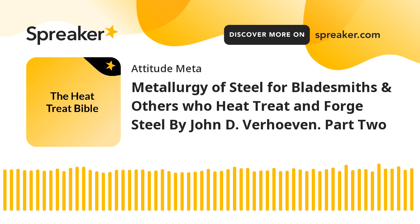In pure iron the difference between ferrite and austenite is a difference in their atomic structure. As illustrated in Figs. 1.2 and 1.3, the iron atoms are arranged with a BCC crystal structure in ferrite and a FCC crystal structure in austenite. In both ferrite grains and austenite grains this atomic structure does not change as one moves around in the grain. Hence, similar to ice and water, both ferrite and austenite are individual phases.